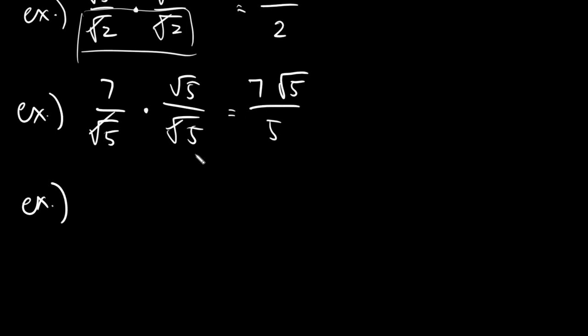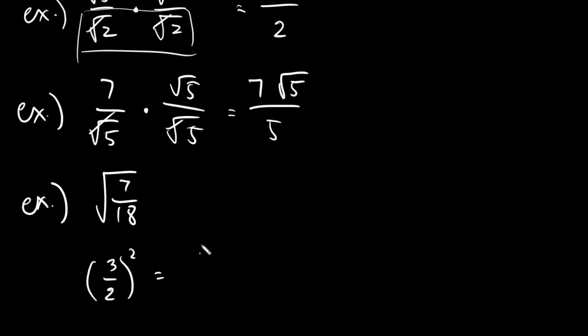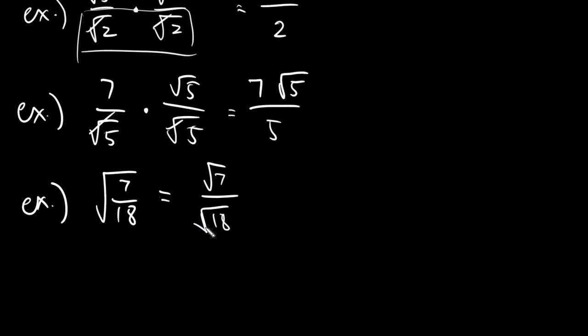Let's have another one. Say we have the square root of 7 over 18. Now in this case it's not immediately obvious whether you have a radical denominator, because you would notice that there is only one radical and the number inside is a fraction. But please remind yourself that if you have a radical, it works just like a rational fraction — meaning you will give it to the numerator and the denominator. Just like having 3 halves squared — you give it to the 3 and to the 2.